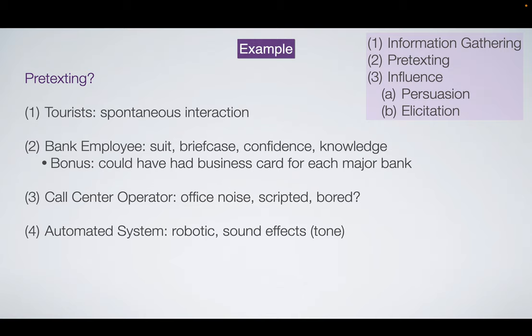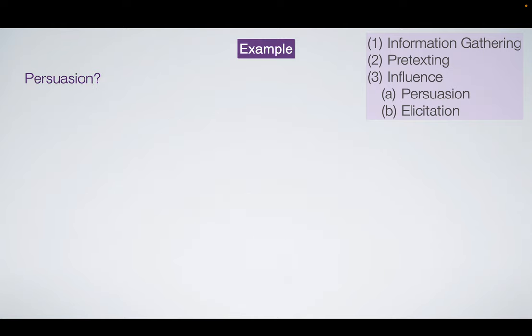The last pretext — you can call it one or not — was the automated system. It was meant to sound robotic, even though it was a human reading a script, and they had sound effects for tones to make it seem like you were actually talking to an automated system. So persuasion and elicitation: what is the attacker trying to get the victim to do? Elicitation is trying to get them to give up information — like the bank PIN number — and that's the main element of this attack.